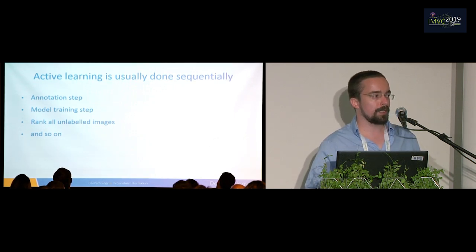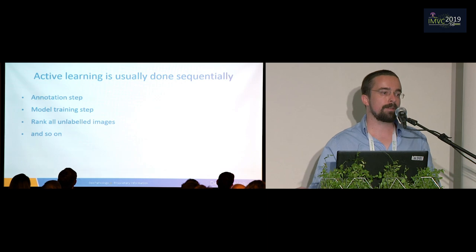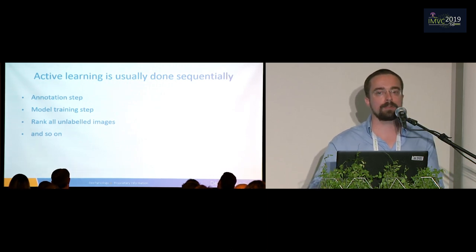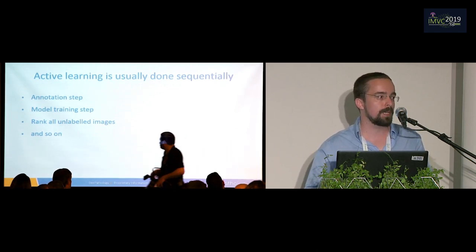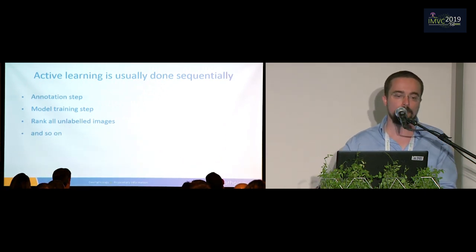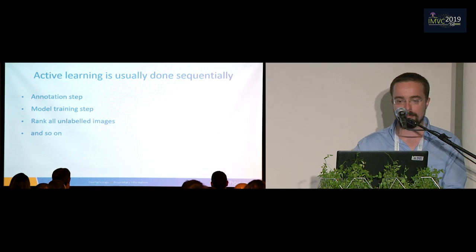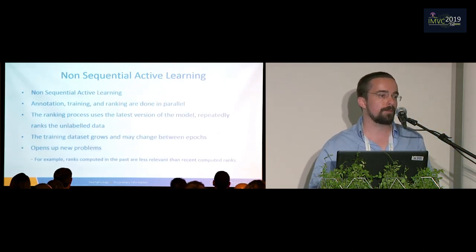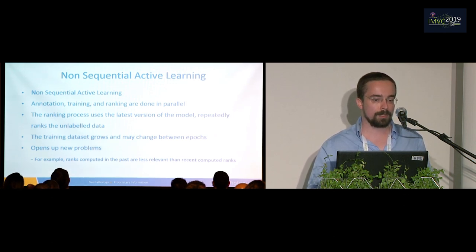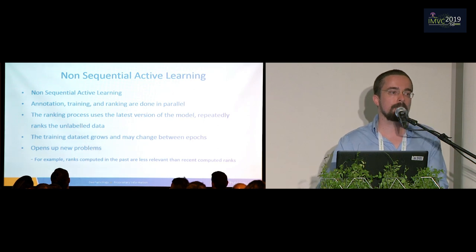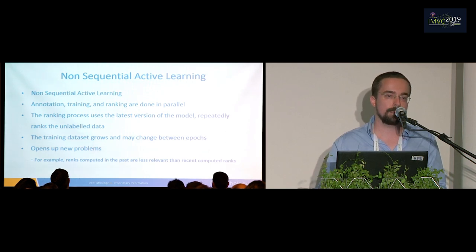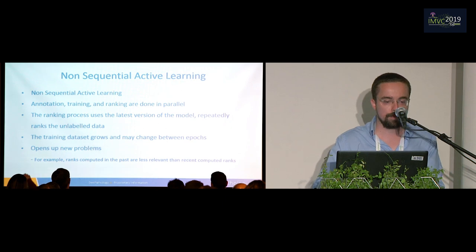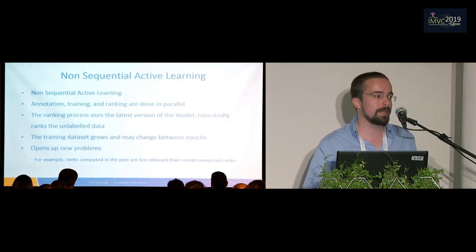Active learning is usually done sequentially — it's a round-based game. We have an annotation step, then after finishing annotating a few images we train a model, and only then use it to rank all remaining images, and only after ranking do we go back and annotate again. The downside is that you have to wait for every stage to finish. So instead we're doing non-sequential active learning, where annotation, training, and ranking are all happening together in the background. The ranking process uses a model that's constantly changing because we're training the model all the time in the background, and we're also training on a dataset that's growing because we're continuing to do annotations. Between two epochs of model training, the dataset will change.